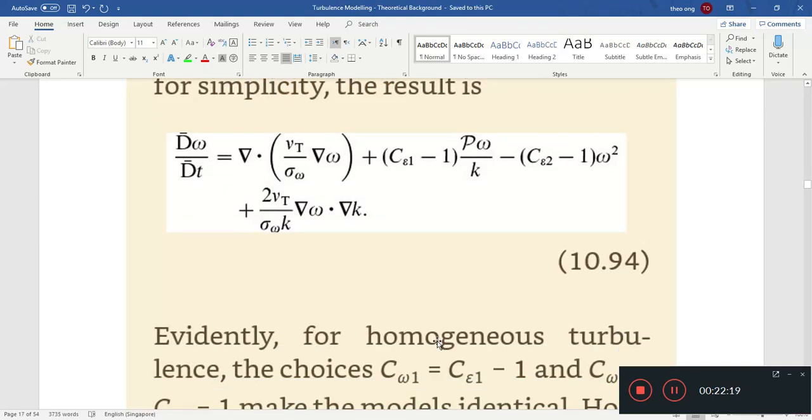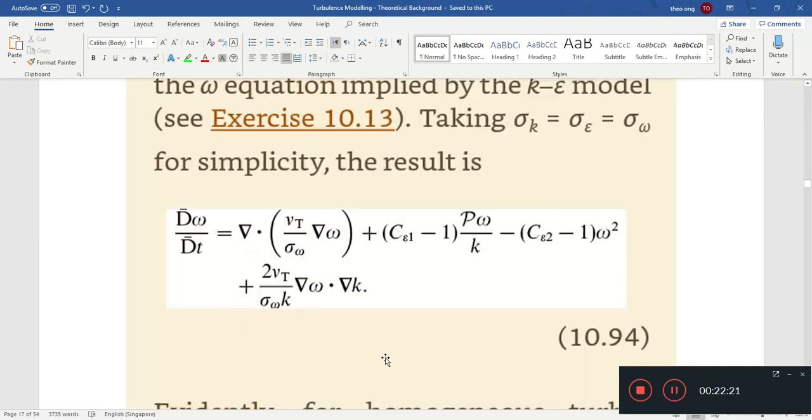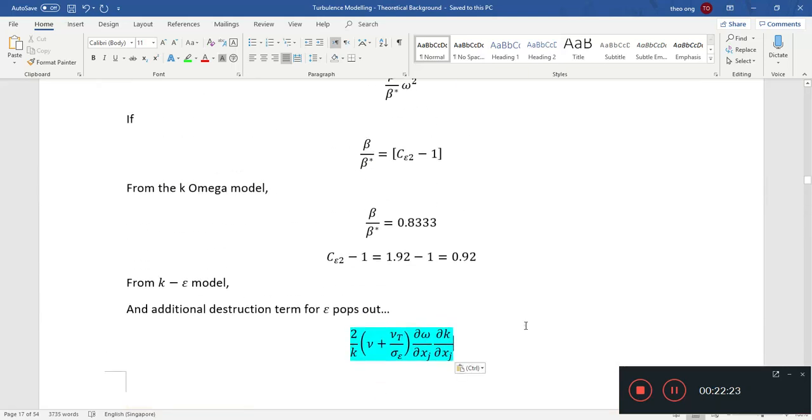Hopefully that clarifies what the difference is between k-omega and k-epsilon, at least in terms of the model. And in the next video, we want to discuss more about the k-omega SST model, shear stress transport, which is the blend between k-epsilon and k-omega. Thanks for watching. I'll see you guys next time. Bye-bye.